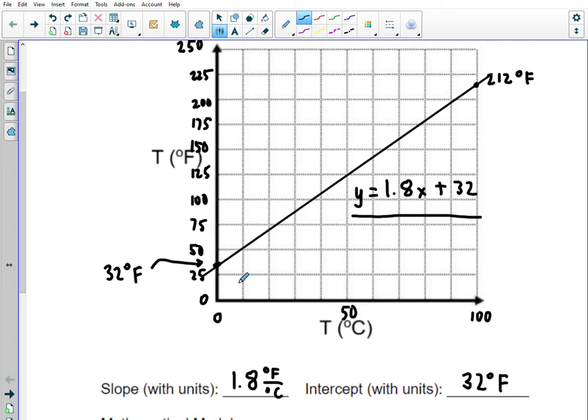We already said the intercept is 32 because that's the freezing point of water at zero Celsius. Where we get 1.8, we can look at comparing the freezing point data point to the boiling point data point. If you can remember that water boils at 212 and 100 Celsius, what you can do is think, okay, there's a certain amount of run between those two points and there's also a certain amount of rise between those two points. The run is 100 degrees Celsius between freezing and boiling. The rise is not 212 because we're starting at 32; the rise is 180 degrees Fahrenheit.